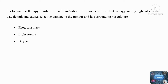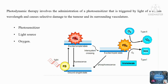In type 1 reactions, the photosensitizer in its excited triplet state reacts with biomolecules such as lipids, proteins, and nucleic acids, transferring hydrogen atoms via the radical mechanism. This produces free radicals and radical ions. The type of radical depends on the target molecule, such as lipids, proteins, or nucleic acids, which then react with oxygen to produce reactive oxygen species.